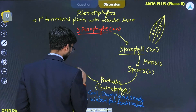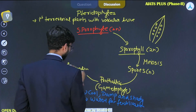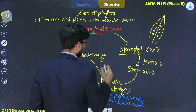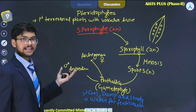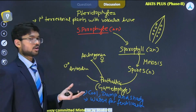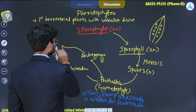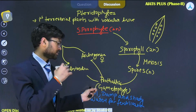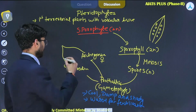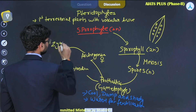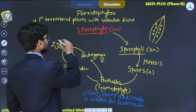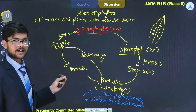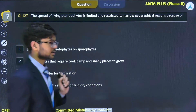The antheridium forms antherozoids or male gametes, which are flagellated. For the process of fertilization or syngamy, they require a medium of water, and this specific requirement is what restricts pterophytes from spreading into wider localities. After syngamy, a zygote forms, then an embryo, which leads to the sporophytic phase. That covers the life cycle of pterophytes.